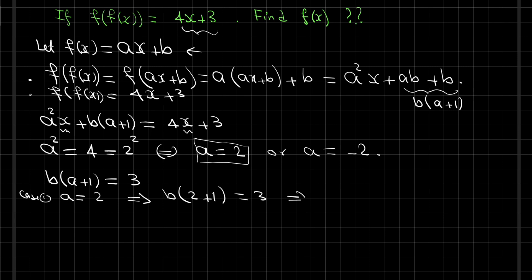This is equivalent to 3b equals 3, so b equals 1. For the first case, we have the function f of x equals 2x plus 1, and this is the first possible value of f of x.